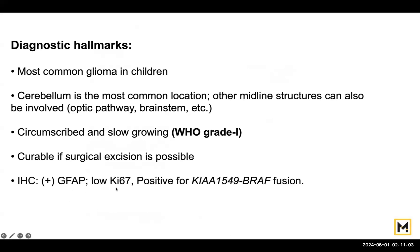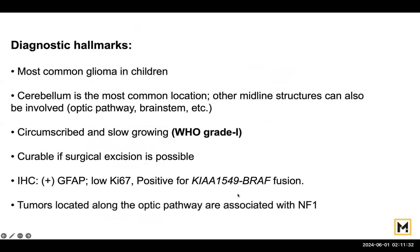There would be a very low Ki-67. Ki-67 measures the mitotic index, and if Ki-67 is lower it means that the number of mitoses are less, indicating a less aggressive tumor. What you also see in a pilocytic astrocytoma is a KIAA1549-BRAF fusion gene, which is now emerging as one of the good diagnostic markers. If it is present in the optic pathway, they are usually associated with neurofibromatosis type 1.